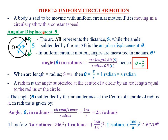The first term is called angular displacement, denoted by theta. Consider a body moving from point A to point B in a circular path. The distance from A to B is called the arc length. The arc AB subtends an angle theta at the center O of the circle, and the radius is R. The arc AB represents distance S, while the angle subtended by arc AB at the center is called the angular displacement, which is theta — the angle subtended at the center of a circle by an arc.